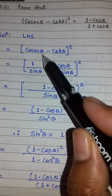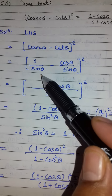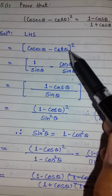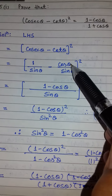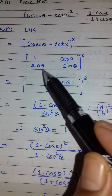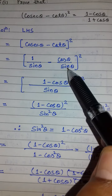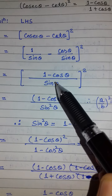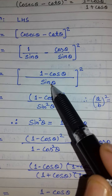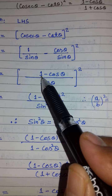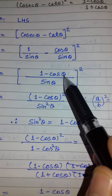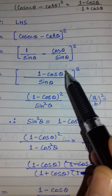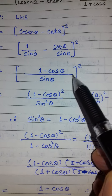Cosec θ को मैं 1 upon sin θ लिख सकता हूँ, और cot को cos upon sin θ लिख सकता हूँ। अब इन दोनों parts में LCM sin θ है, तो यहाँ पर बच जाएगा (1 − cos θ) का whole square।